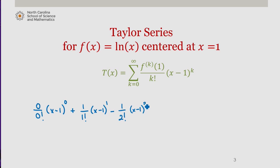plus 2 over 3 factorial times x minus 1 to the third, minus 6 over 4 factorial times x minus 1 to the fourth,